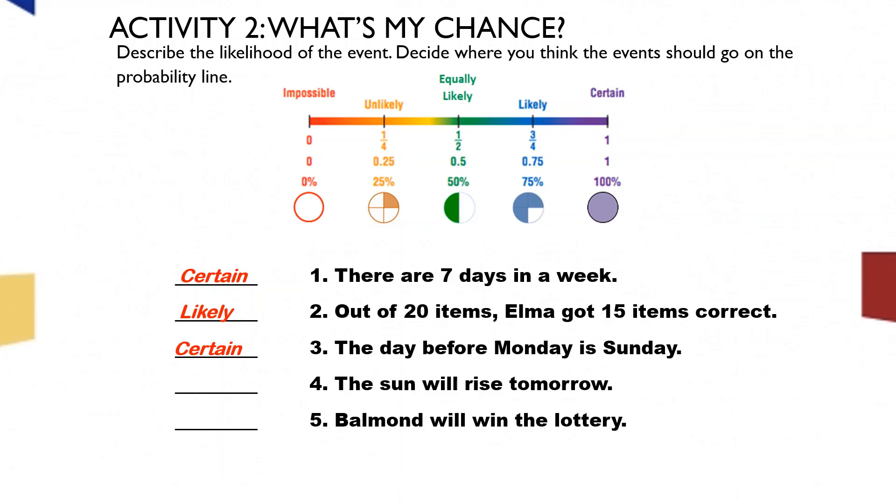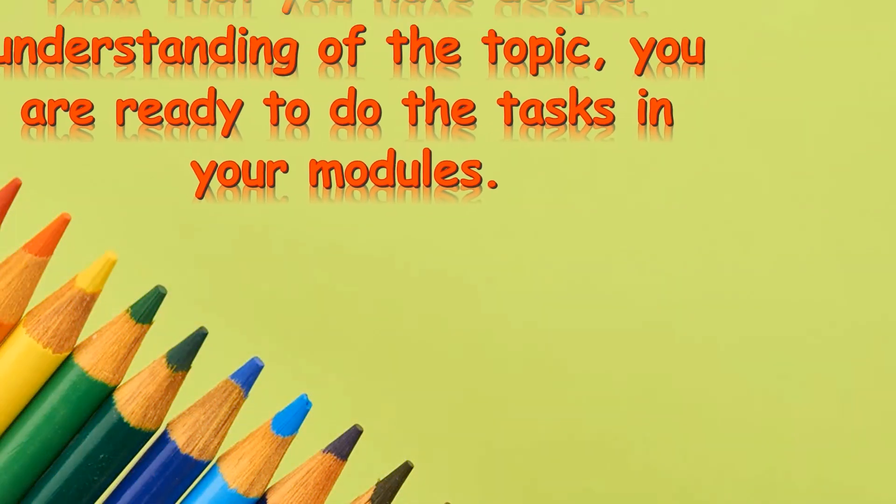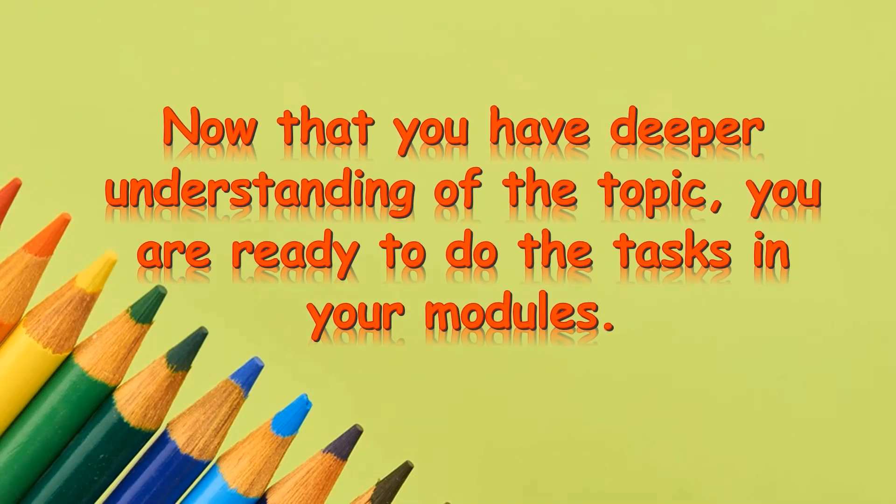Next, we have here, the day before Monday is Sunday, is certain. Why? As we all know, the next after Sunday is Monday. Next, the sun will rise tomorrow. So, we have here also the certain. And why? It's because, it's sure that the sun will rise. Next, number 5, Balmond will win the lottery. So, unlikely. Since, there are a lot of chances that it won't happen. Now, you have the deeper understanding of the topic. It's your turn to answer your module. Goodbye and thank you.